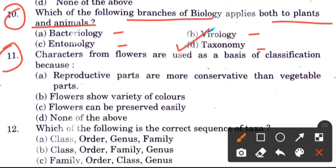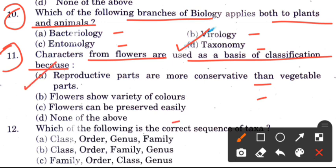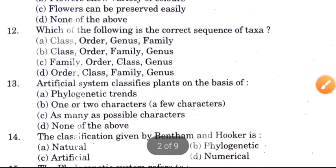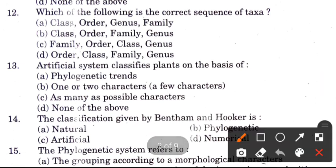Question 11: Characters from flowers are used as a basis of classification because — options are: reproductive parts are more conservative than vegetative parts, flowers can be preserved easily, or none of the above. The answer is A: reproductive parts are more conservative than vegetative parts.